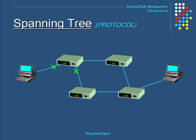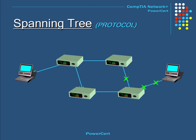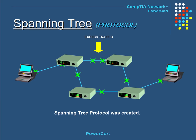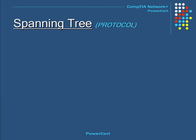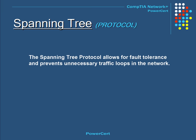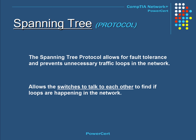Some networks are designed to be more fault tolerant. Multiple switches are installed so that if one fails, data can bypass it and use the others to reach its destination. However, a potential problem with this setup is broadcast traffic loops, which can happen when there are multiple active paths between destinations, slowing the network due to excess traffic. To solve this problem, the Spanning Tree Protocol was created. It allows for fault tolerance and prevents unnecessary traffic loops by allowing switches to talk to each other to find if loops are happening.